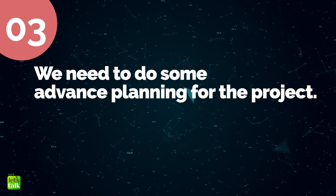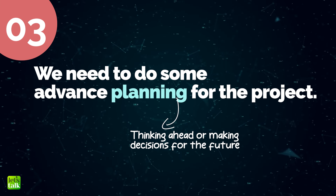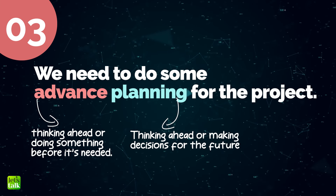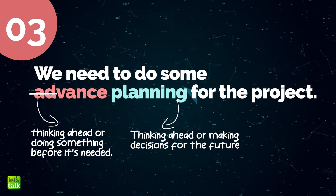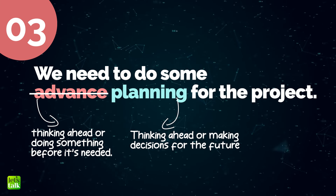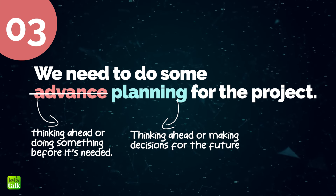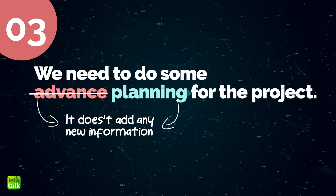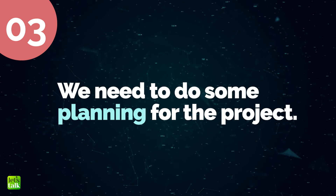We need to do some advance planning for the project. Planning means thinking ahead or making decisions about what to do in the future, and advance also means thinking ahead or doing something before it's needed. Just saying planning is enough because it already means preparing in advance. Using both advance and planning is like saying the same thing twice — it doesn't add anything new to your sentence. So you can simply say 'We need to do some planning for the project.'